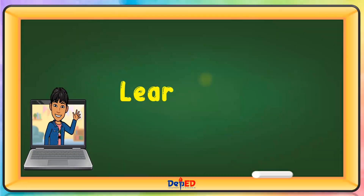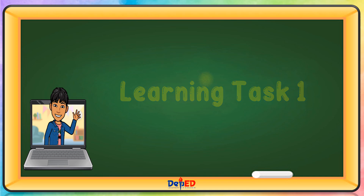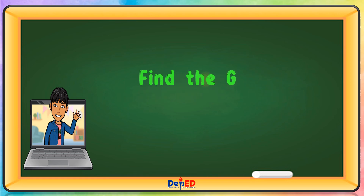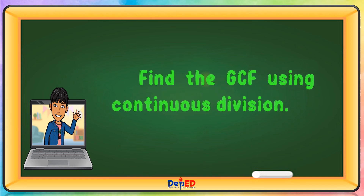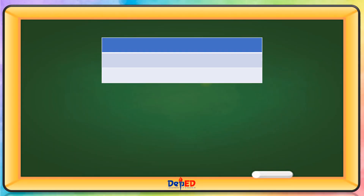Learning Task 1: Find the GCF using continuous division. Our first problem is 12, 16, and 24.